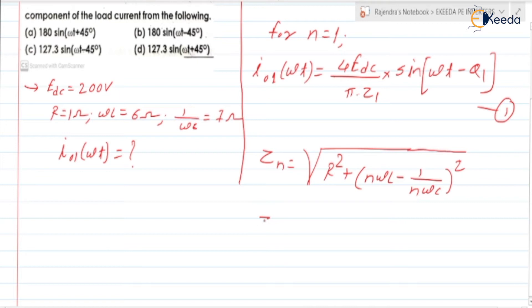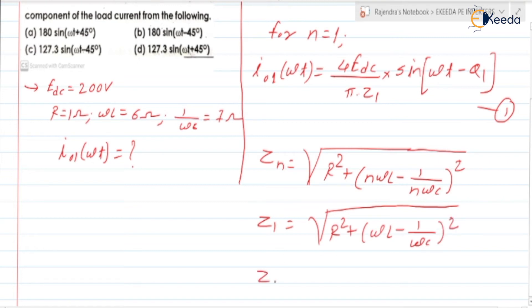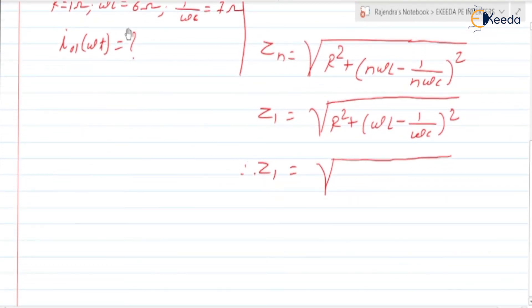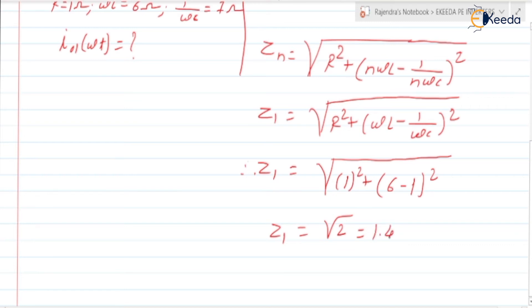For N equal to 1, Z₁ = √[R² + (ωL − 1/(ωC))²] = √[1² + (6 − 7)²] = √[1 + 1] = √2 = 1.4142 ohm.